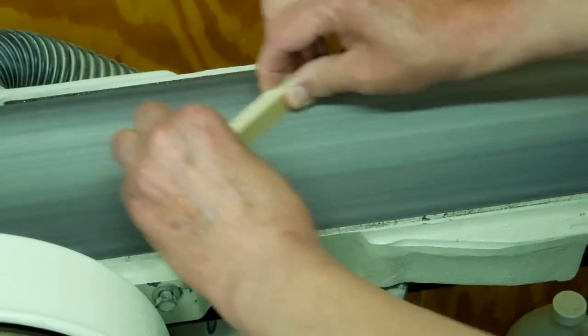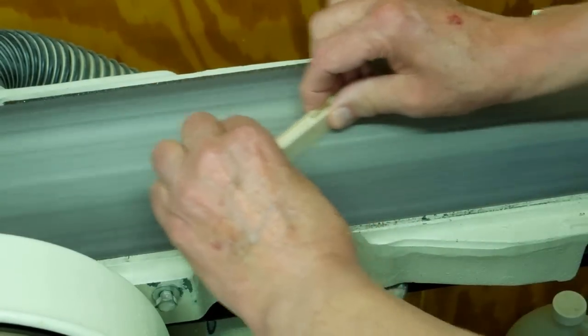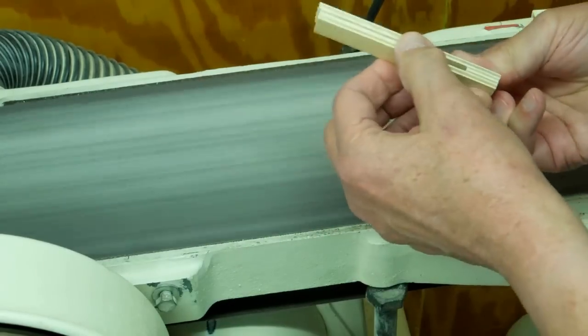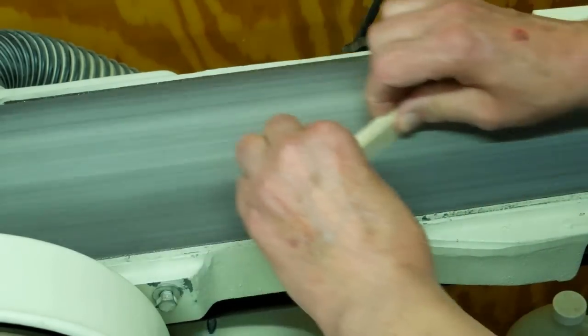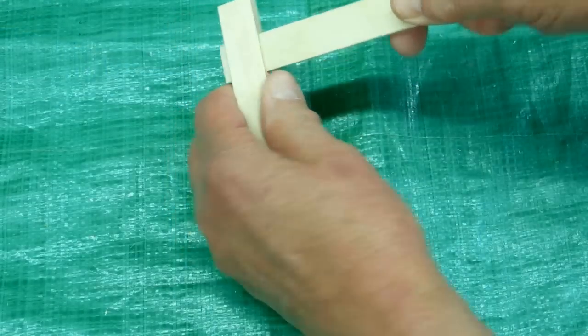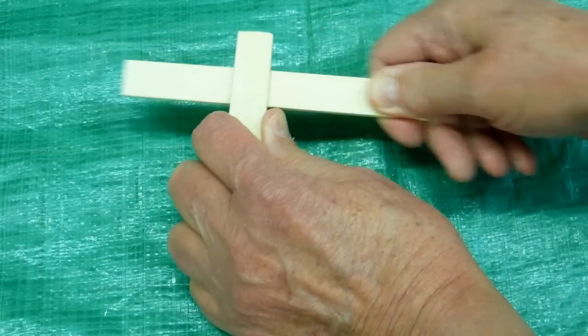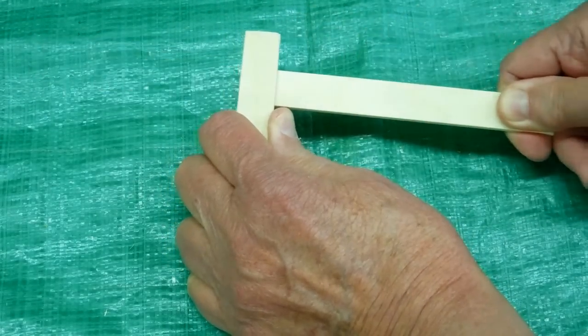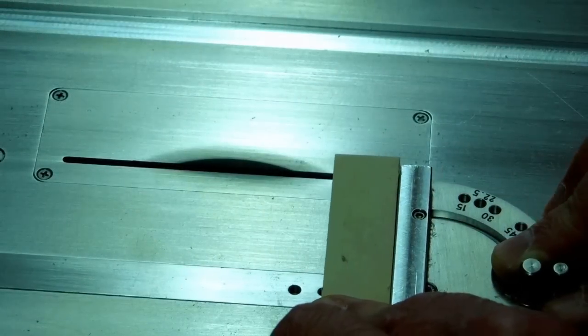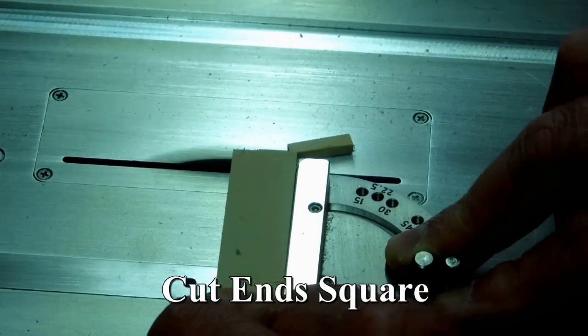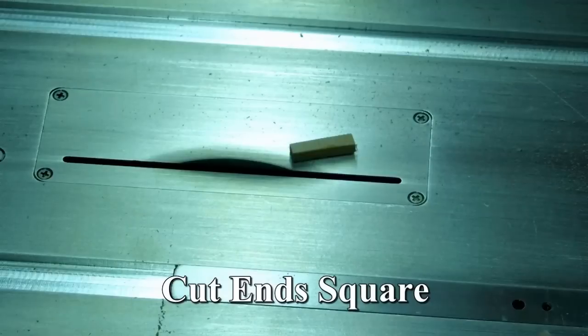You take the clamps off, go to your belt sander, and sand both sides of these. And your 6 inch strip should go in and out of there freely. And we'll go to the table saw and cut off these ends.